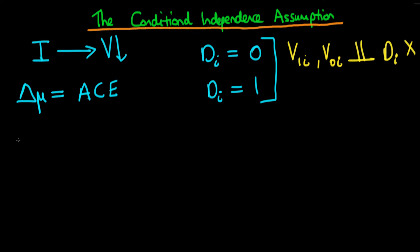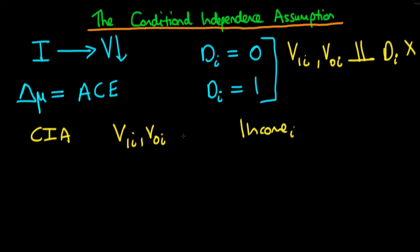But what the conditional independence assumption states is that we might be able to say that V1I and V0I, conditional on the level of income in that particular state, might be independent of DI. So conditional on the observed characteristics of that state — of which income might be one of those observed characteristics —